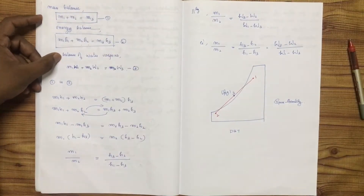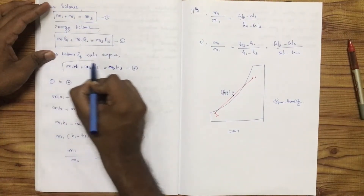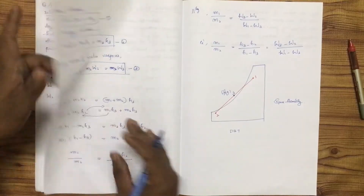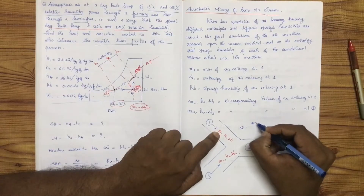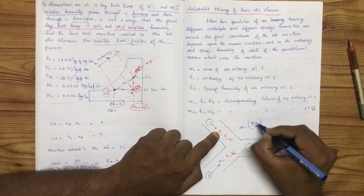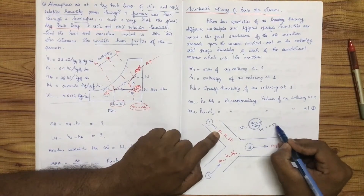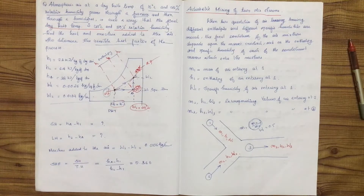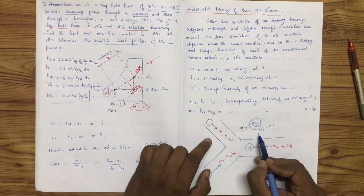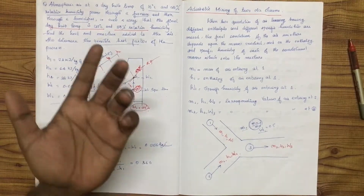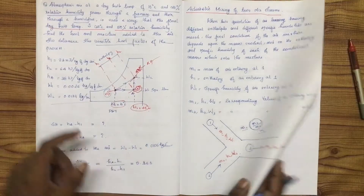After mixing, the air properties are denoted using the suffix 3. For the mass balance of water vapor: M1 W1 plus M2 W2 is equal to M3 W3.